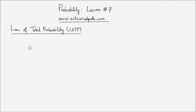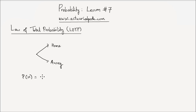Suppose you are a football fan and you have a team that you really support. The team could be playing at home or away. A team playing at home means they're playing in their own stadium, in their own city, and they are more likely to win. Let's say the team plays 60% of their games at home and 40% away.